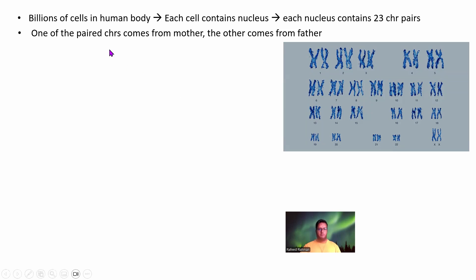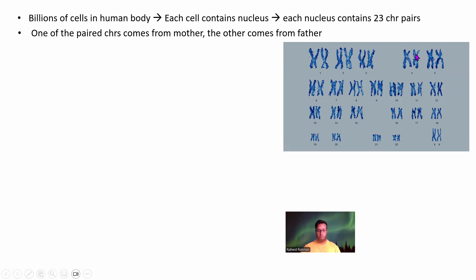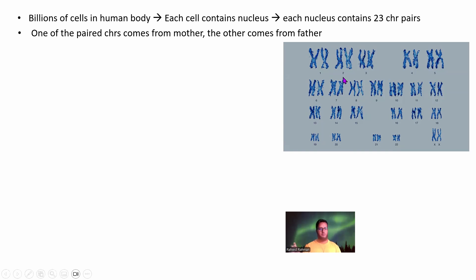One of these paired chromosomes comes from the mother — this one from the mother, this one from the mother, and so on. So one of each pair comes from the mother and the other comes from the father. Let's actually see how it looks.